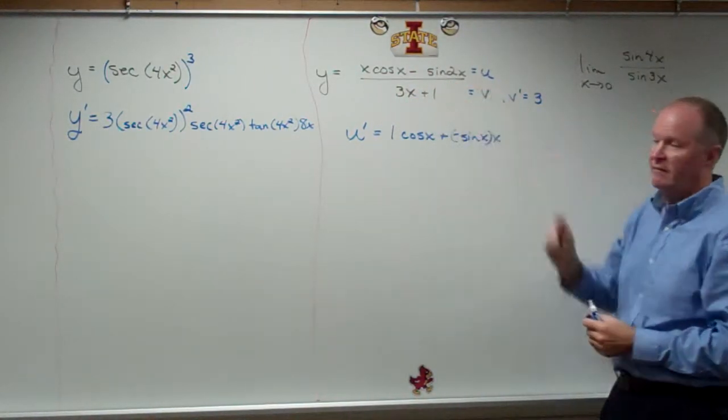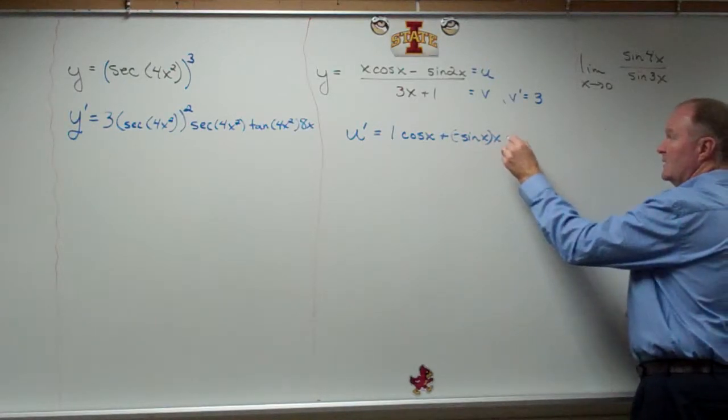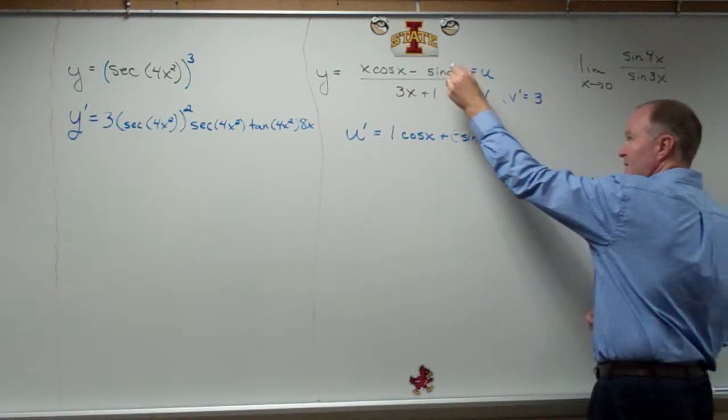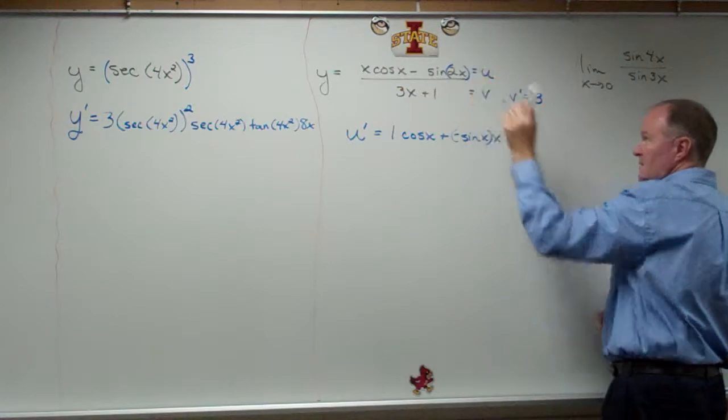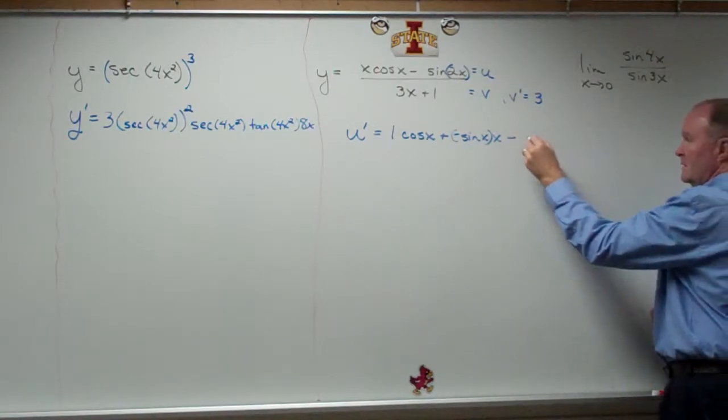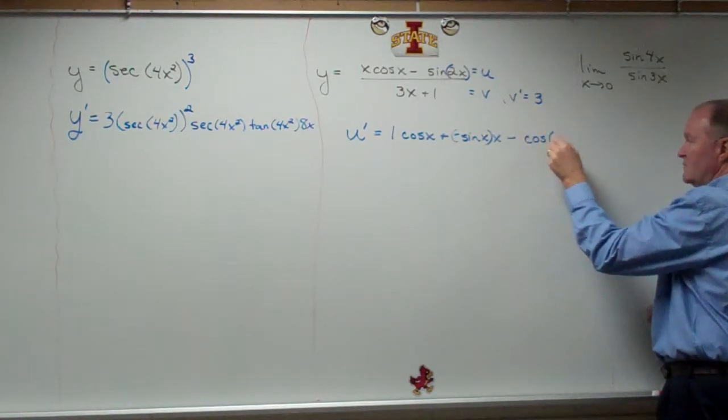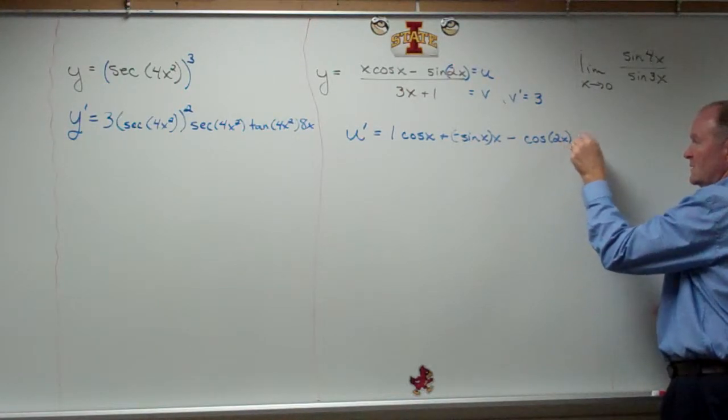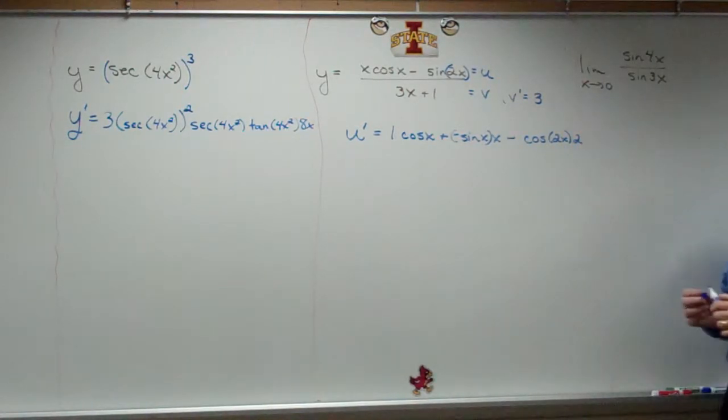So that takes care of that part. Now I've got to subtract the derivative of the sine of 2x. Well, remember that's kind of like that. So there's an inside to it. So you do the derivative of the outside, which is the cosine of 2x, times the derivative of the inside, which is 2.